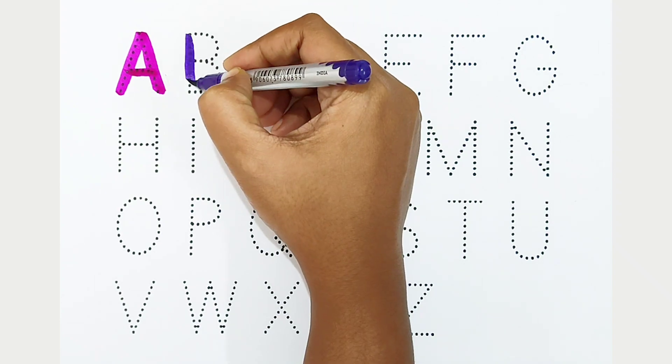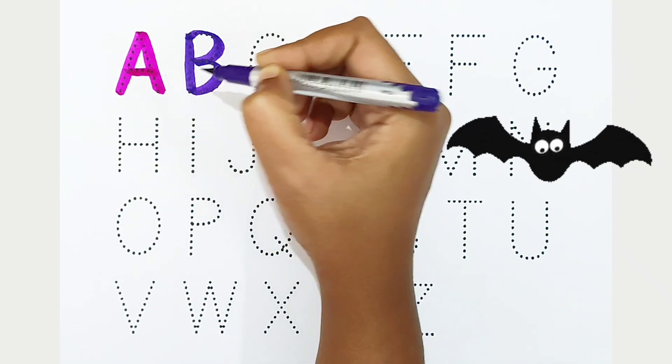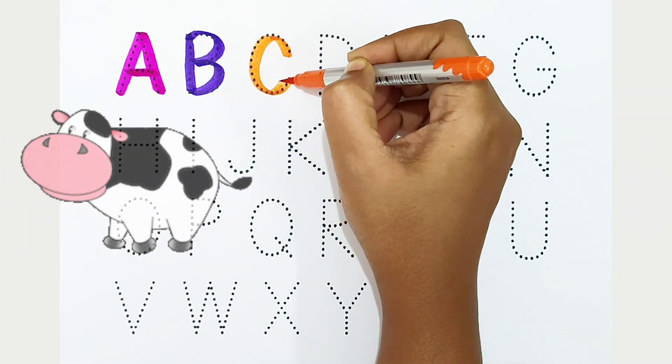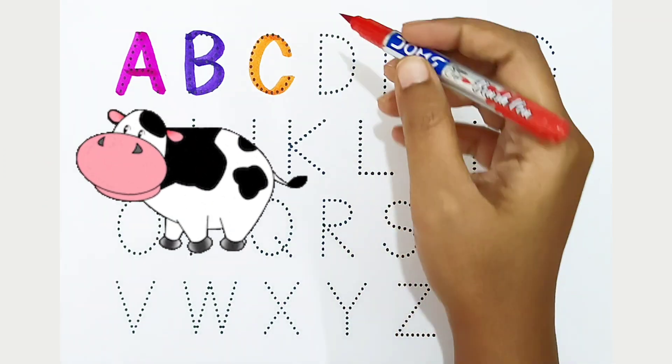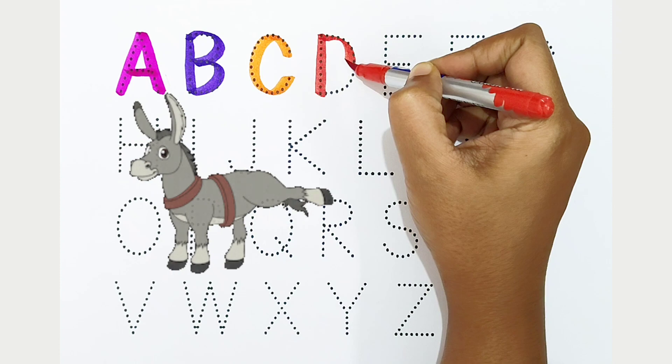violet color, B is for bat. C, orange color, C is for cow. D, red color, D is for donkey.